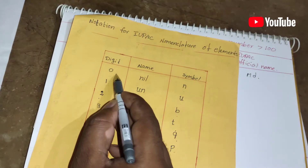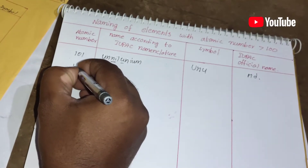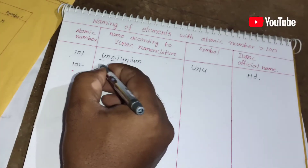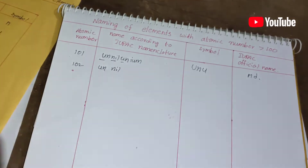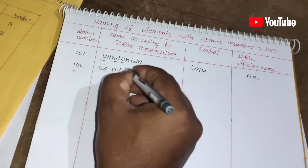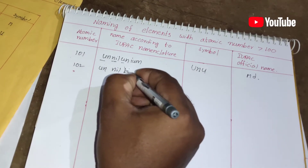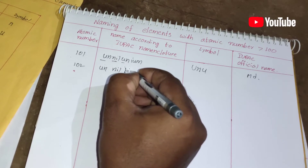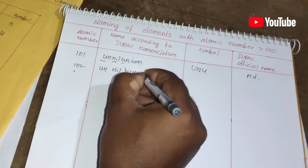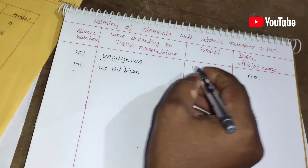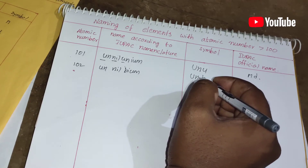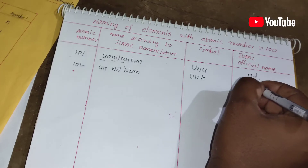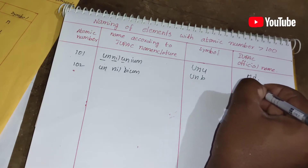For element 102: 1 = un, 0 = nil, 2 = bi, plus '-ium' gives Unnilbium. The symbol is Unb. The IUPAC official name for element 102 is Nobelium.